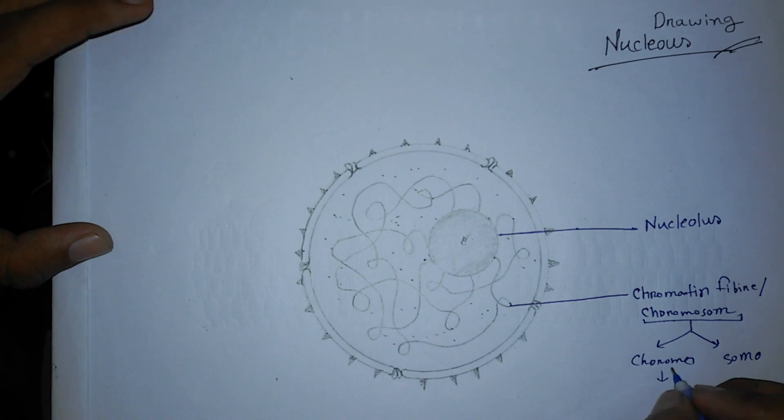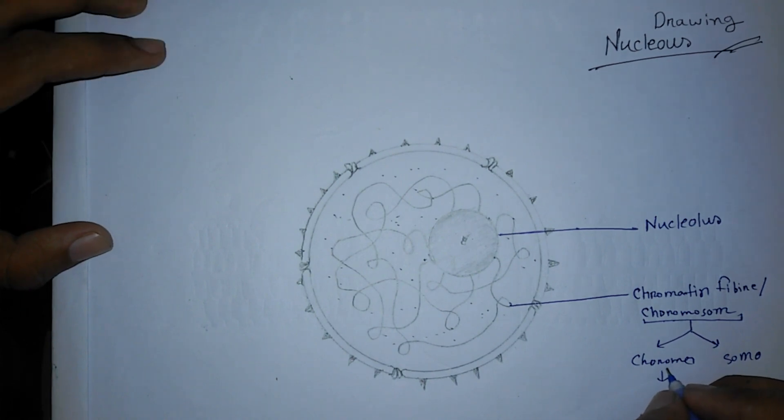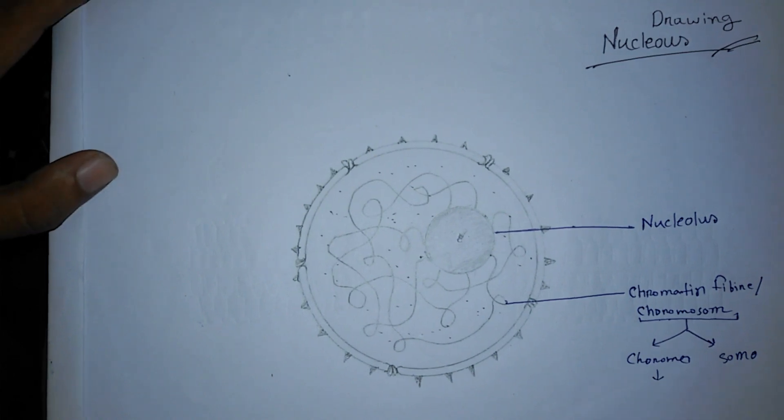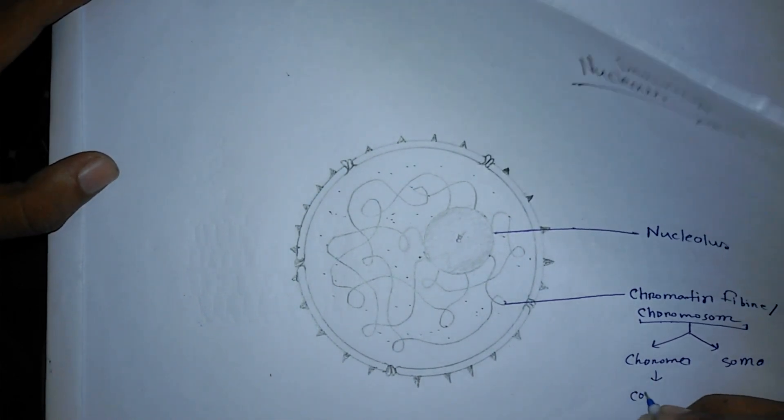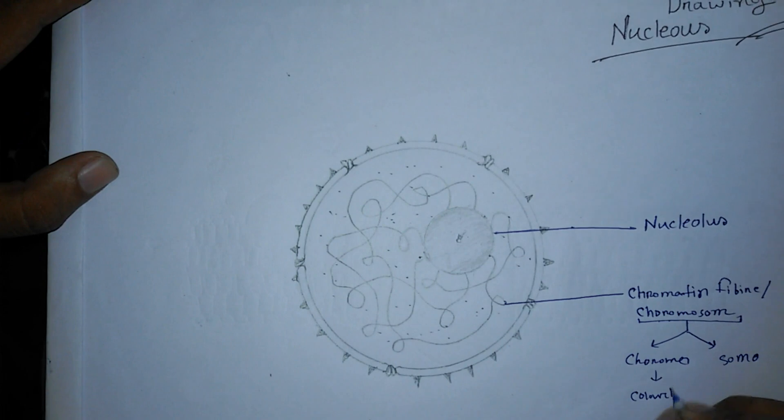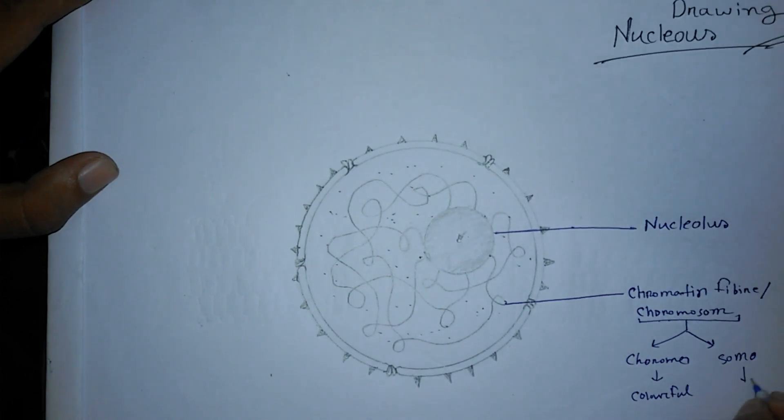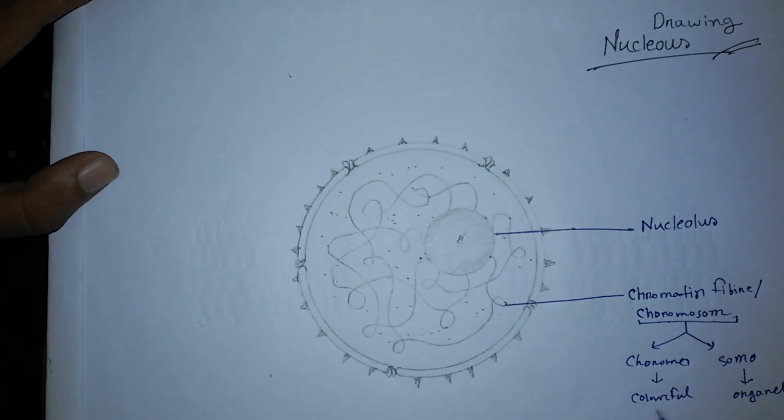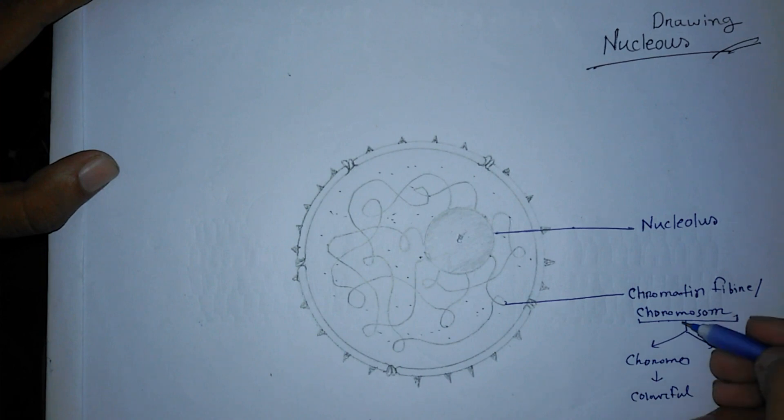I hope you all know that 'chromo,' like in plastic, means colorful—C-O-L-O-U-R colorful. And 'some' means organelle. So colorful organelle.